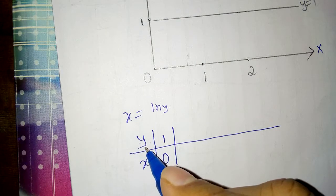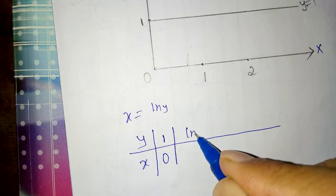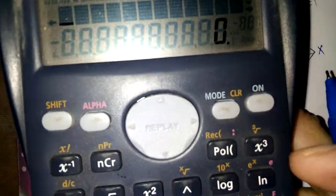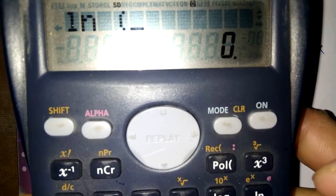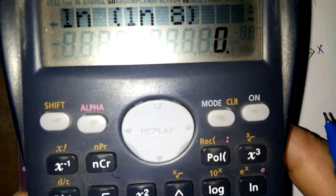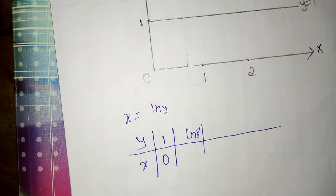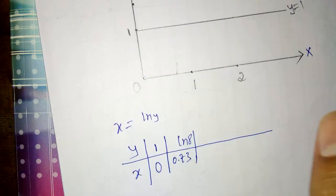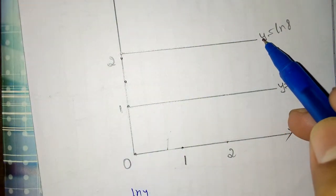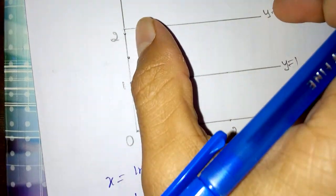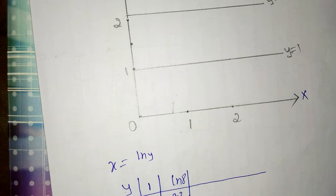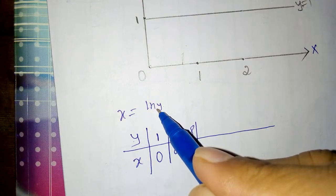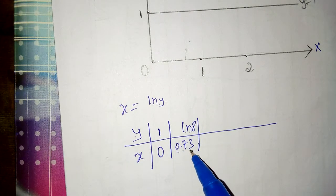Similarly, if we put y equal to ln(8), then we get ln(ln(8)), which we check in a scientific calculator. ln(ln(8)) is equal to 0.73. The reason I put ln(8) in the place of y is because the line y is equal to ln(8) is there, so I want to find the x value at that line. That becomes 0.73.